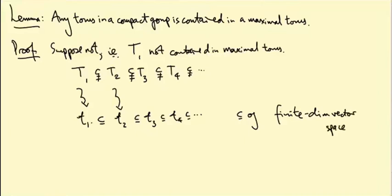So this sequence of the algebras has to stabilize at some point. In other words, for some capital N, little t_{k+N} is isomorphic to little t_N for all k bigger than 0. Right, so this sequence of subspaces stabilizes.